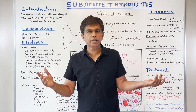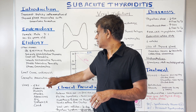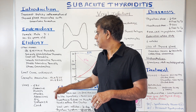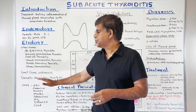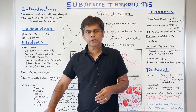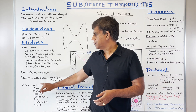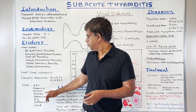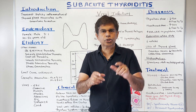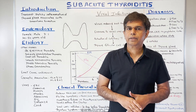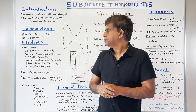The exact cause isn't fully known, but there are genetic associations — specifically HLA-B35 and HLA-B67. Viral causes are strongly implicated, including EBV, Coxsackievirus, Mumps, Measles, HIV, and Influenza. A lot of new information is also emerging on COVID-19 causing subacute thyroiditis.